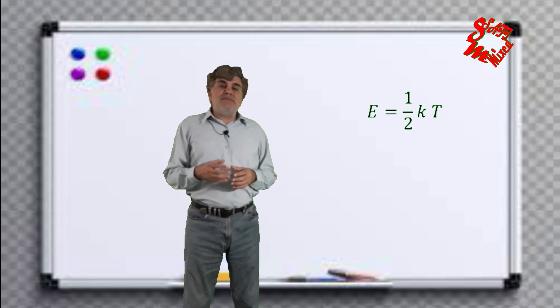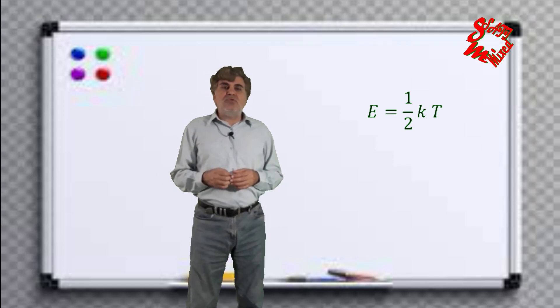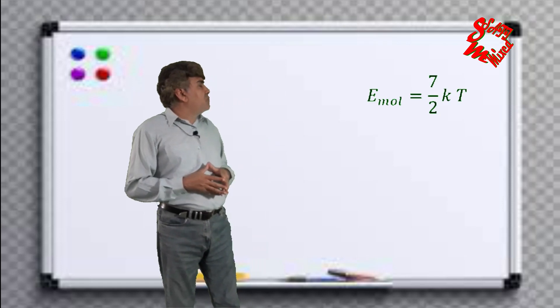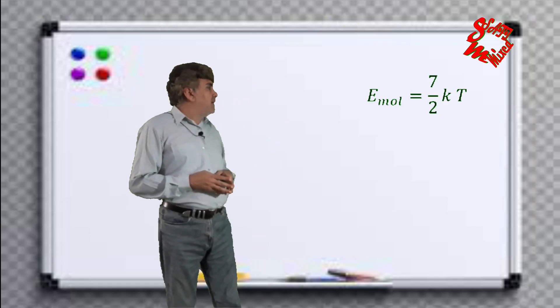So the energy for a diatomic molecule with seven degrees of freedom becomes E_molecule = (7/2)kT.